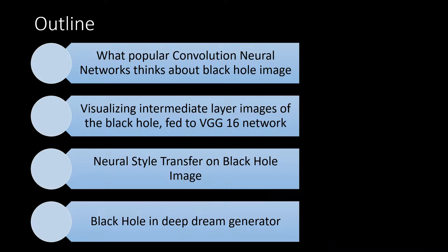The outline will be as follows: we will first feed this black hole image to a popular convolutional neural network algorithm and see what the AI thinks this image is. Then we'll visualize the intermediate layers of the network, try to do a neural style transfer on the black hole image, and generate some deep dream images from it.